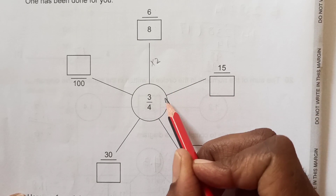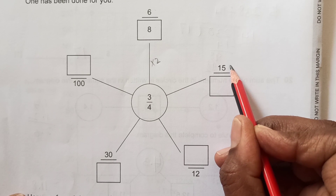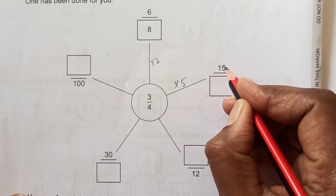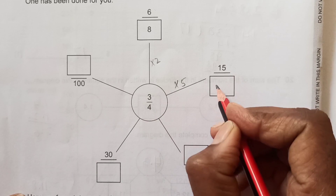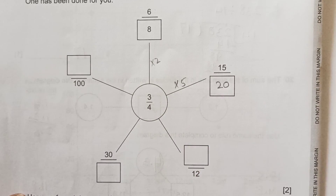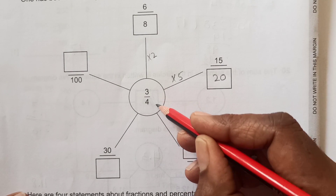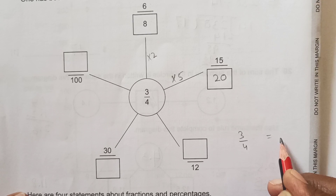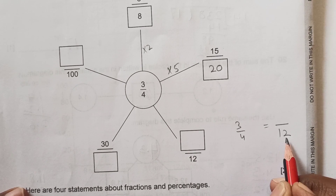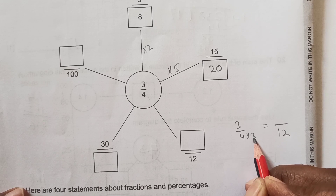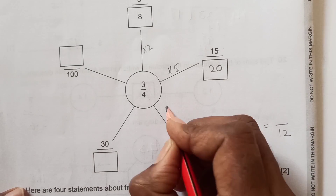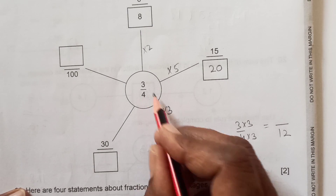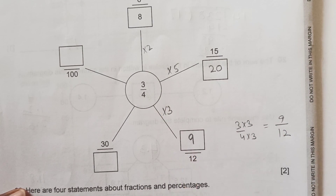The next one: we have 15 in the numerator. 3 over 4 times 5 will give you 15. 3 times 5 is 15. Similarly, 4 times 5 will be 20. Same we have to do here. In this case we have 3 over 4, and an equivalent fraction here is 12 in the denominator. We get 12 by multiplying by 3. So same we do up there — multiplying throughout by 3. 3 times 3 gives you 9, so 9 will go in the numerator.